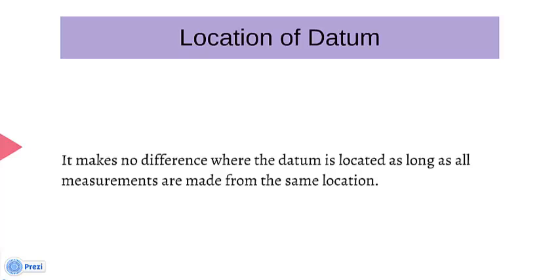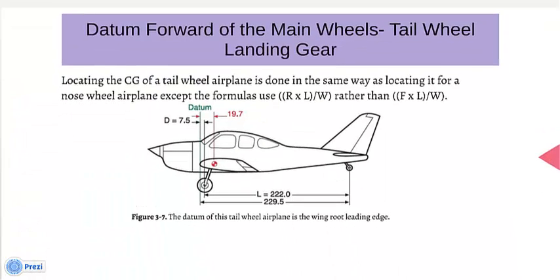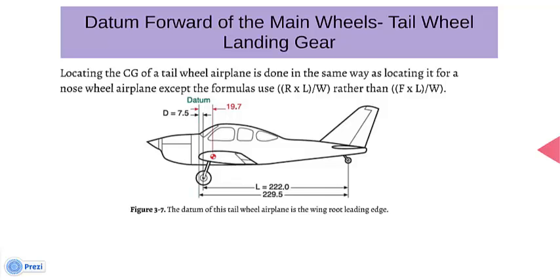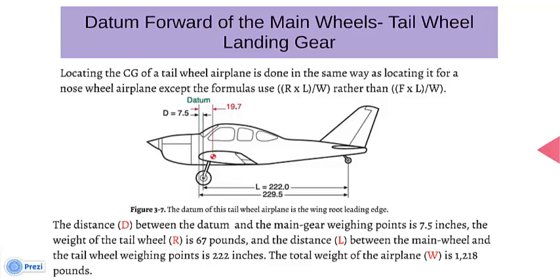Datum forward of the main wheels, tail wheel landing gear. Locating the CG of a tail wheel airplane is done the same way as for a nose wheel airplane, except the formulas use R times L, all over W, rather than F times L, all over W. The distance D between the datum and the main wheel weighing points is given, the distance between the main wheels and the tail wheel weighing points is 222 inches, and the total weight W is 1,218 pounds.